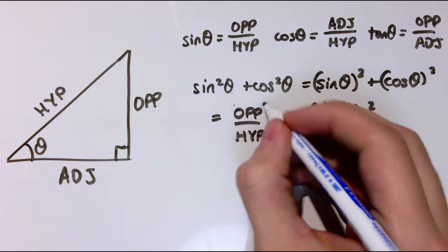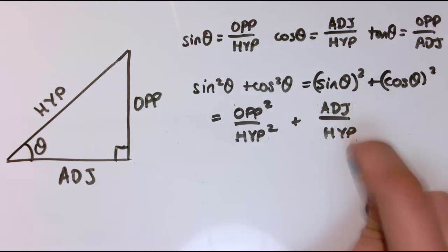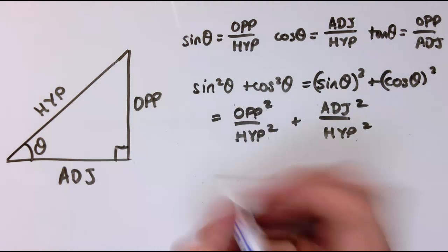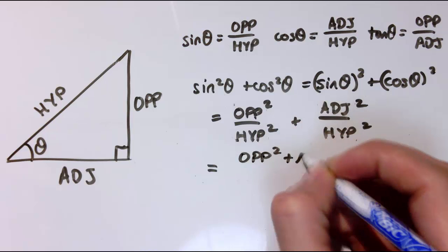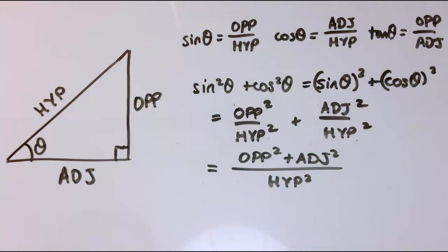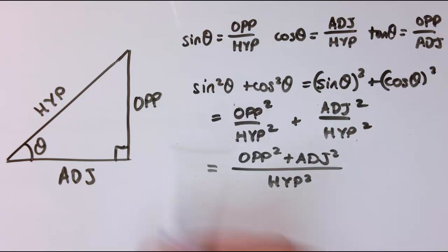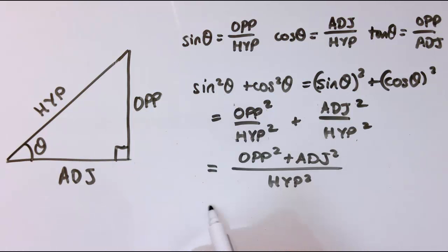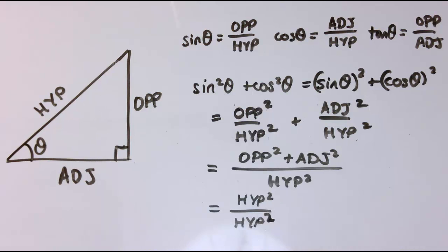When you square a fraction you square the top and the bottom, so I rewrite this as opposite squared over hypotenuse squared, plus adjacent squared over hypotenuse squared. They have the same denominator, so I combine them into a single fraction: opposite squared plus adjacent squared, all divided by hypotenuse squared. This is a right-angle triangle, so by Pythagoras' theorem, opposite squared plus adjacent squared equals hypotenuse squared. I can replace the numerator with hypotenuse squared.